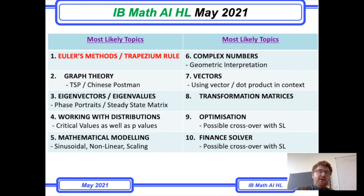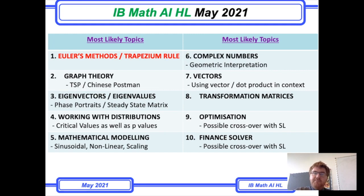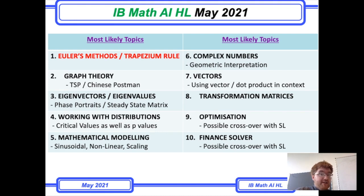Number two is graph theory. I think there'll be one question on this over the three papers — it could also lend itself to a paper three. Make sure you know how to solve the Chinese postman problem depending on how many odd vertices you've got, and also the traveling salesman problem. Know the deleted vertex algorithm and the nearest neighbor algorithm, as well as Kruskal's algorithm and Prim's algorithm. I think it'll be a fairly substantial question.